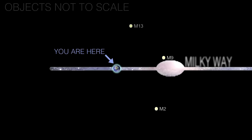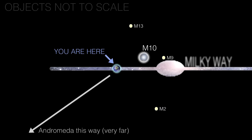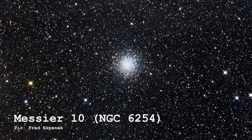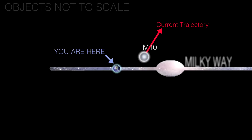I looked through the literature and at what was known about M10, and I thought it would make a really interesting example of how we talk about how objects orbit other objects. All the stars in M10 are orbiting around the center of mass, and they're mostly gravitationally bound. But M10 itself is orbiting around our galaxy.